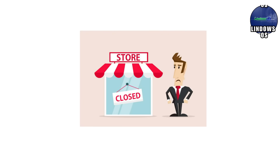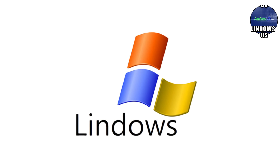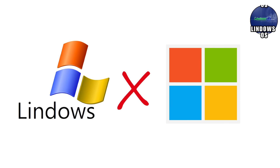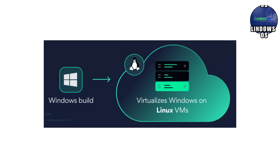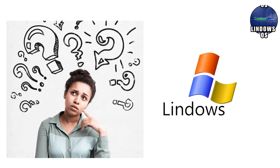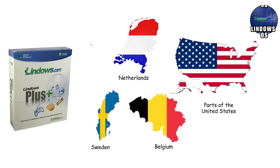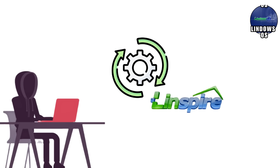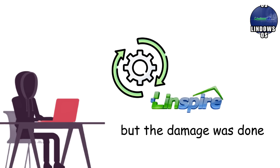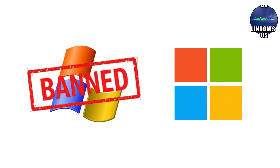Retailers in certain regions were ordered to stop distributing it entirely. The funny part is that Lindows OS wasn't even that close to Windows — it used a compatibility layer that struggled to run half the apps it advertised. But the name alone caused enough confusion that judges considered it too similar. In the Netherlands, Sweden, Belgium, and even parts of the United States, the brand couldn't legally appear on shelves. The developers eventually changed the name to Linspire, but the damage was done. The OS that tried to bridge two worlds got banned for almost sounding like the bigger one.